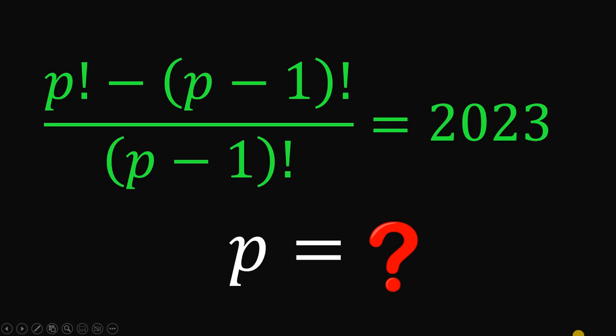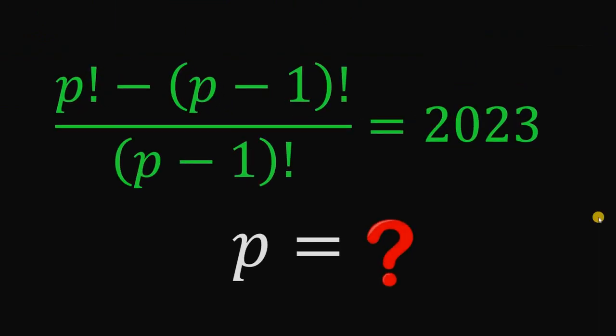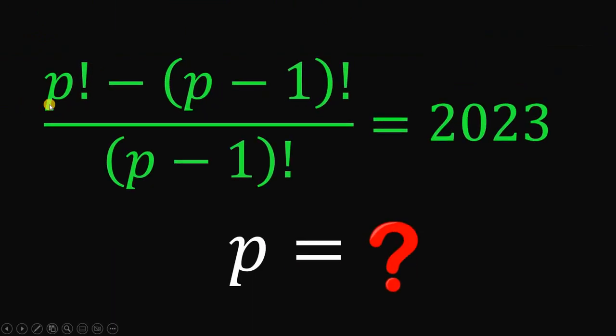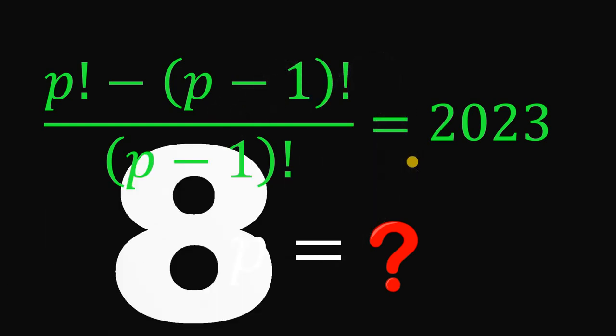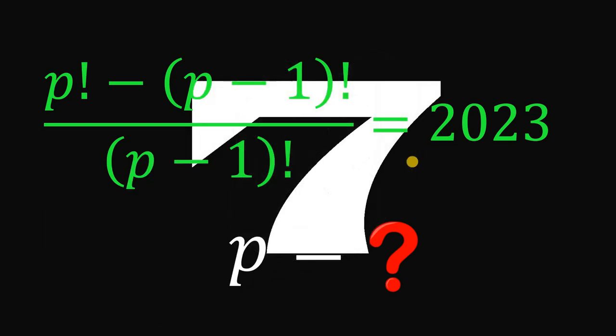Can you solve this math challenge? Here's the question. Solve for the value of P given that P factorial minus P minus 1 factorial all over P minus 1 factorial equals 2023. You can pause this video if you want to give this problem a try.